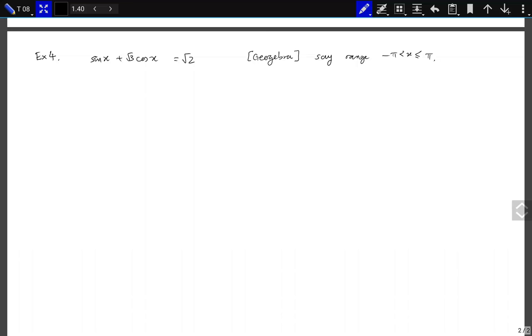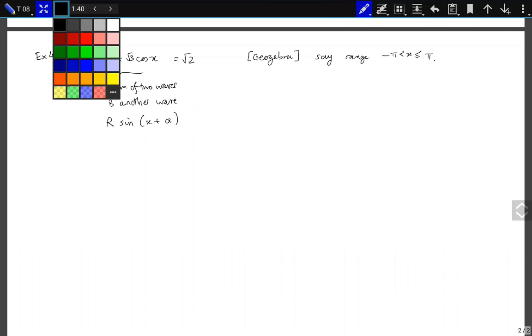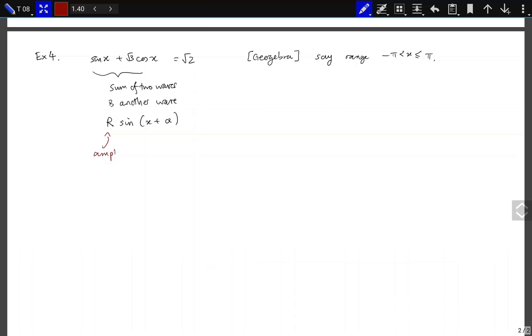What we want to consider is, when you plug this into GeoGebra, you see that these are the sum of two waves. And it's another wave, with an amplitude r, and a phase shift. So you can say that this equals to r sin(x + α). This is the amplitude. And, well, either α or minus α, this is the phase.